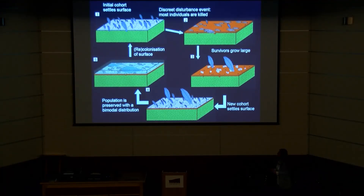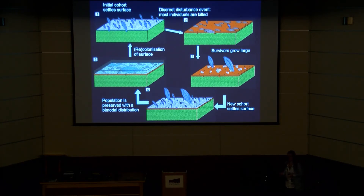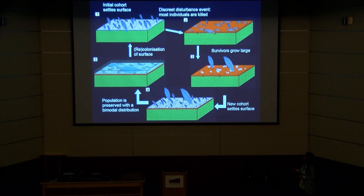We came up with a model to explain this. You have an initial cohort that was normally distributed - an initial community recruited to or settled on the surface. There was a discrete disturbance event, in this case an influx of ash, which killed most but not all of the individuals on the surface, and a couple of them survived.